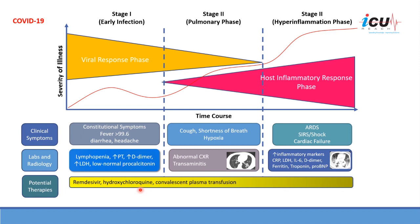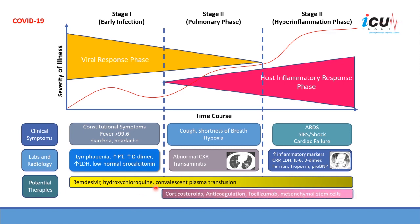On the other hand, medications that target the immune response of the body — such as steroids, tocilizumab, or even mesenchymal stem cells — may work better if timed to the post-inflammatory response phase, mainly after the second week of disease. Anticoagulation is also probably beneficial during this phase, as inflammation is the primary inciting event driving increased coagulation in the body.